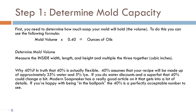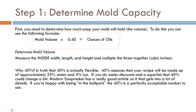Let's determine the mold capacity. To determine how much soap your mold holds, you use the following formula: mold volume times 0.4. That gives you the ounces of oils in the recipe — not the entire recipe, it doesn't include the water or the lye, but it tells you how many ounces of oil you will need. If you don't know your mold volume, measure the inside width, length, and height, multiply the three together, and that gives you your mold volume in cubic inches.